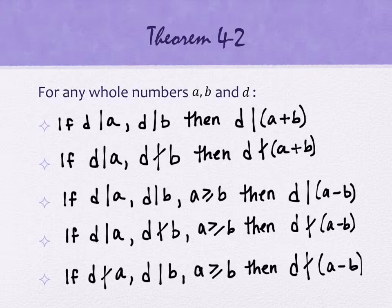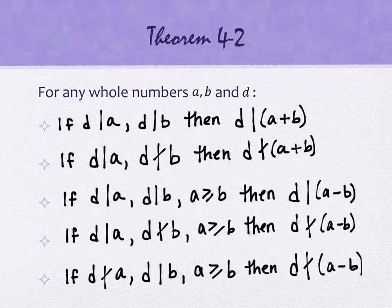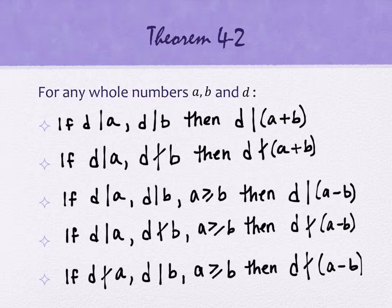Using property five with numbers: three does not divide ten, but three does divide six, and ten is bigger than six. Ten minus six equals four, and here again three does not divide four. It helps to remember these properties by creating examples rather than memorizing the language exactly.